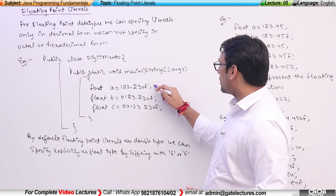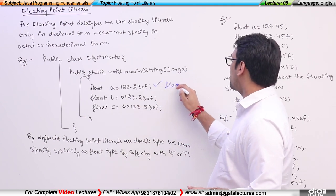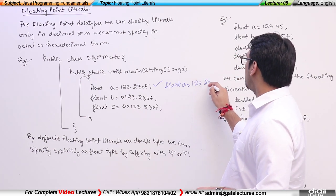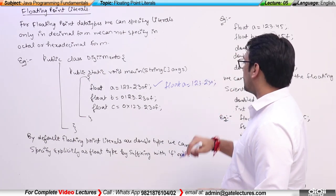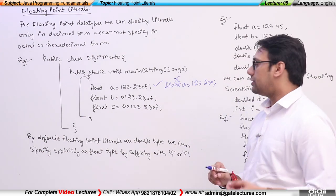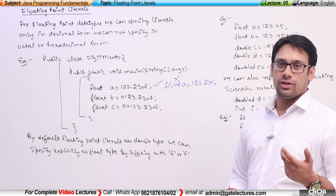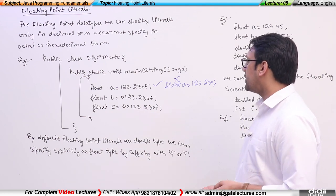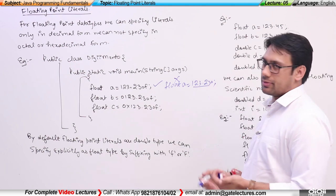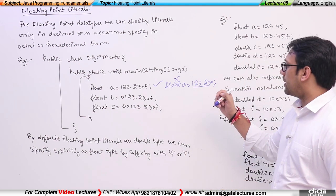This is a correct notation, but if I write something like float a is equal to 123.230 without the 'f', this is not a valid notation because we are not using 'f'. Therefore, this number is not representing a valid floating point number — by default it is a double number.